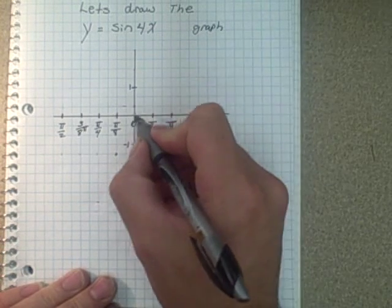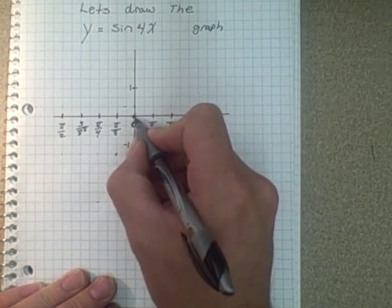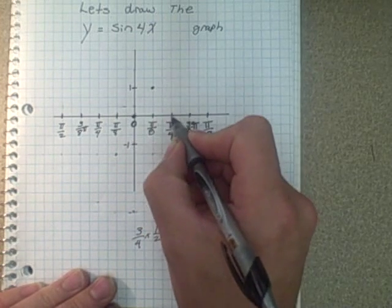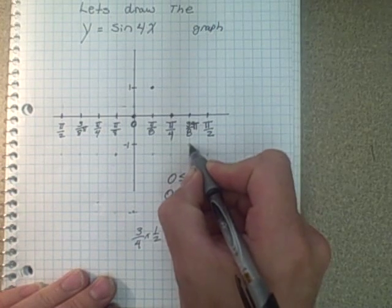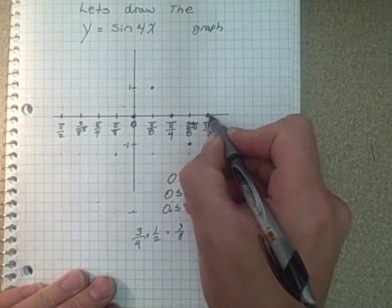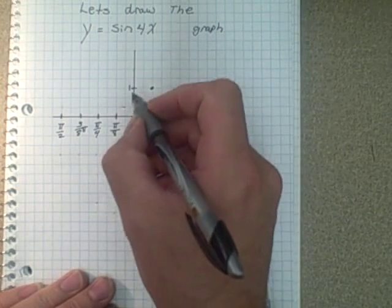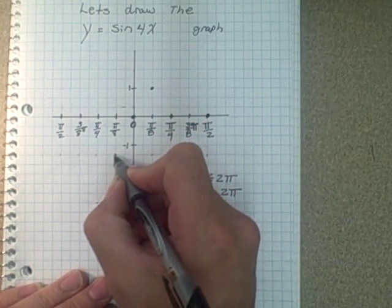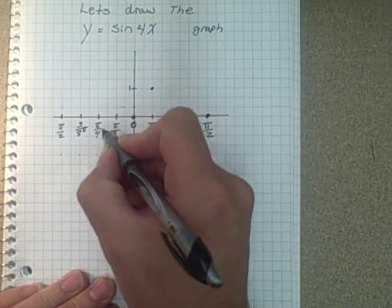And draw it in. A regular sine graph. Using the regular intervals that you would see in a sine graph. Except these have different change now. Because of the B value. So just draw your regular shape sine graph in here.